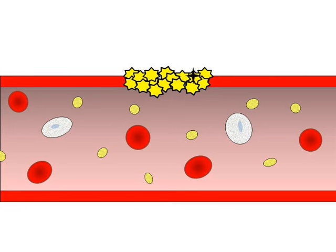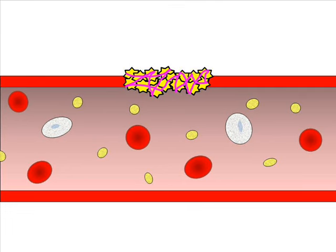When called upon, these clotting factors participate in a complex sequence of chemical reactions to ultimately produce tiny strands of a strong material called fibrin. Fibrin strands form in and around the loosely arranged plug of platelets and eventually form a meshwork which tightly binds the plug together. This meshwork keeps the platelets from being washed away by the flow of blood and makes the platelet plug more watertight.